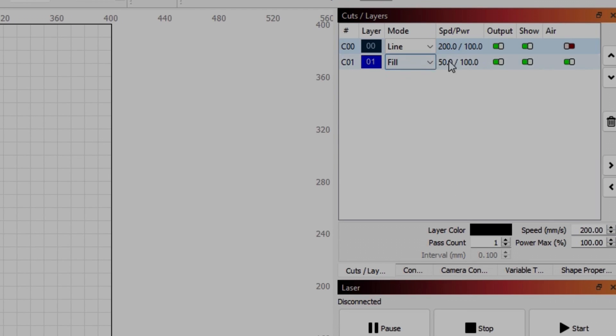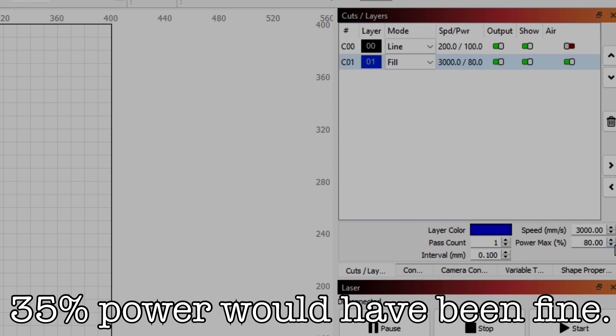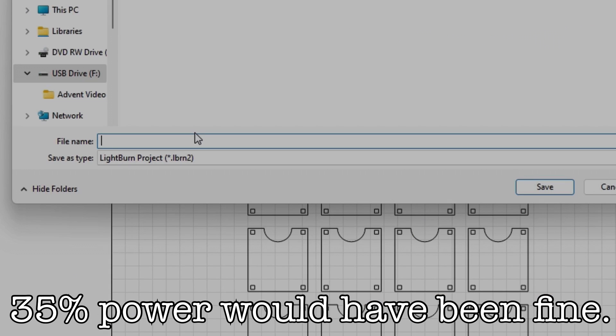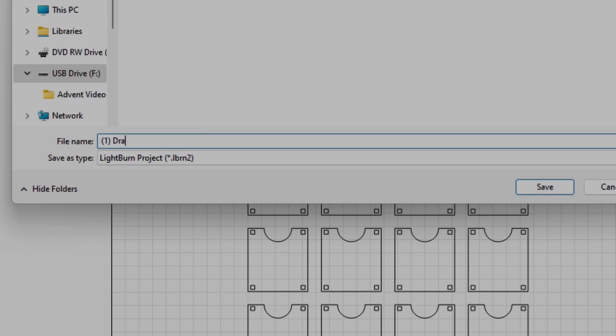I set the laser to cut at 200mm per second with 100% power. After changing the mode on the engraving that I wanted to be filled instead of as a line, I set it to 3000mm per second at 75% power. This was a lot more powerful than it needed to be. Then I saved this as my first cut file and moved on to the next one.